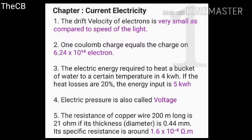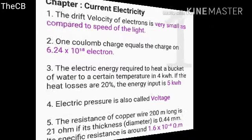The electric energy required to heat a bucket of water to a certain temperature is 4 kilowatt hours. If heat losses are 20%, the energy input is 5 kilowatt hours. Electric pressure is also called voltage. The resistance of a copper wire 200 meters long is 21 ohm, if its diameter is 0.44 mm, its specific resistance is around 1.6 into 10 to the power minus 8 ohm meter.